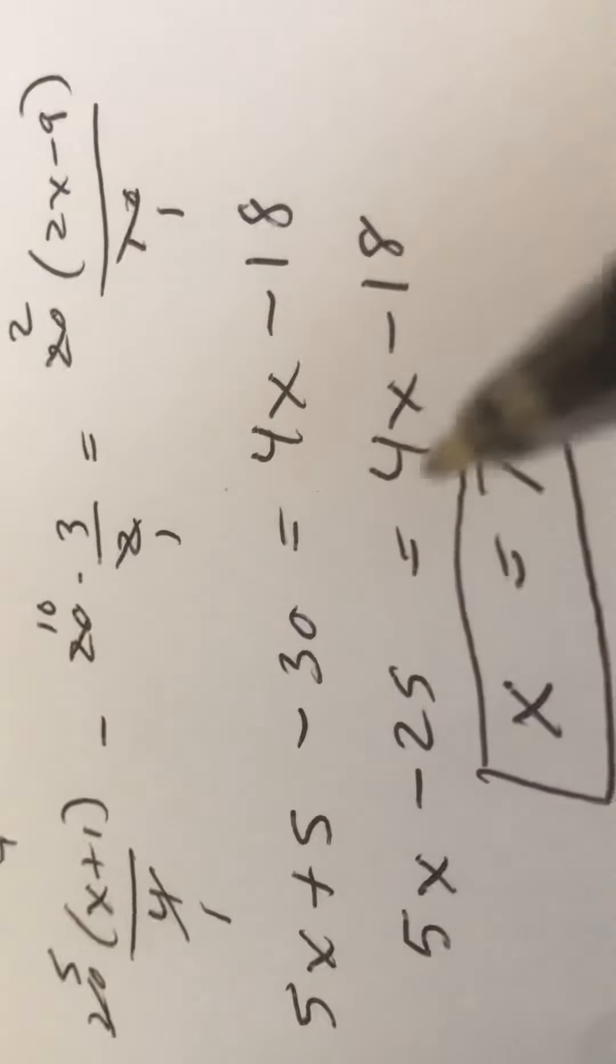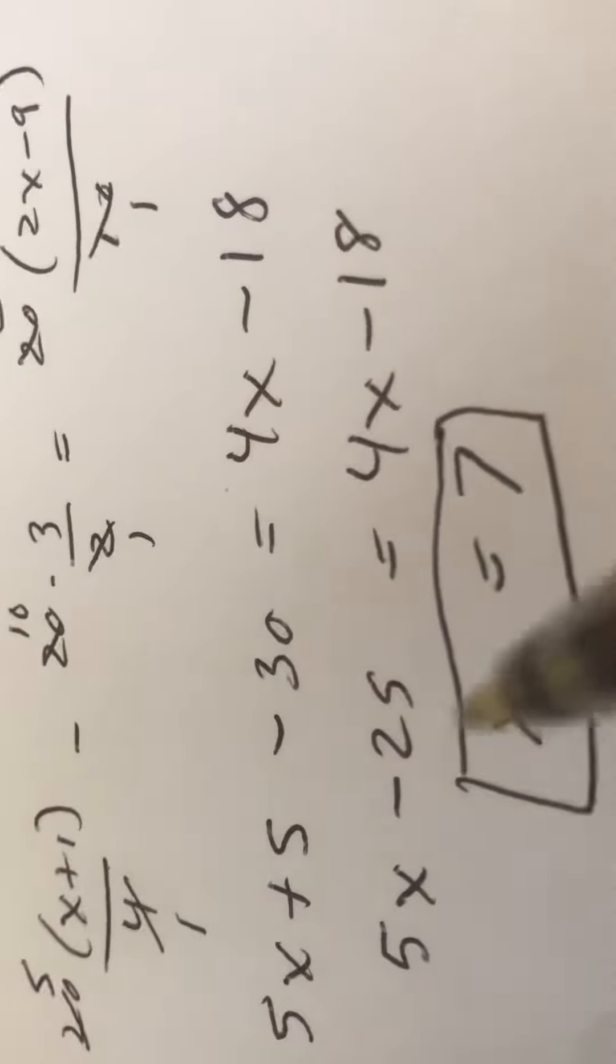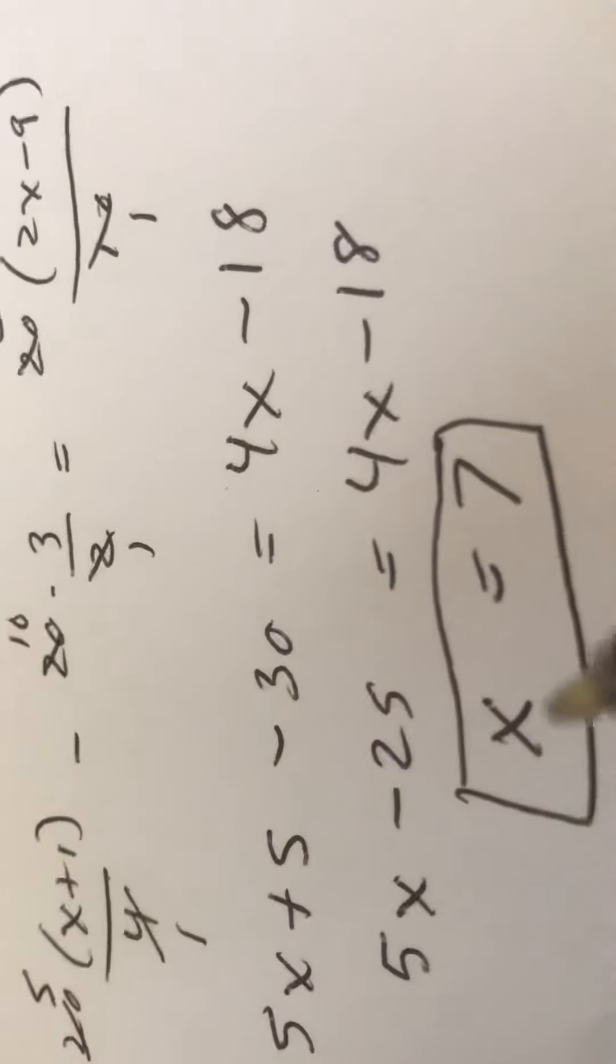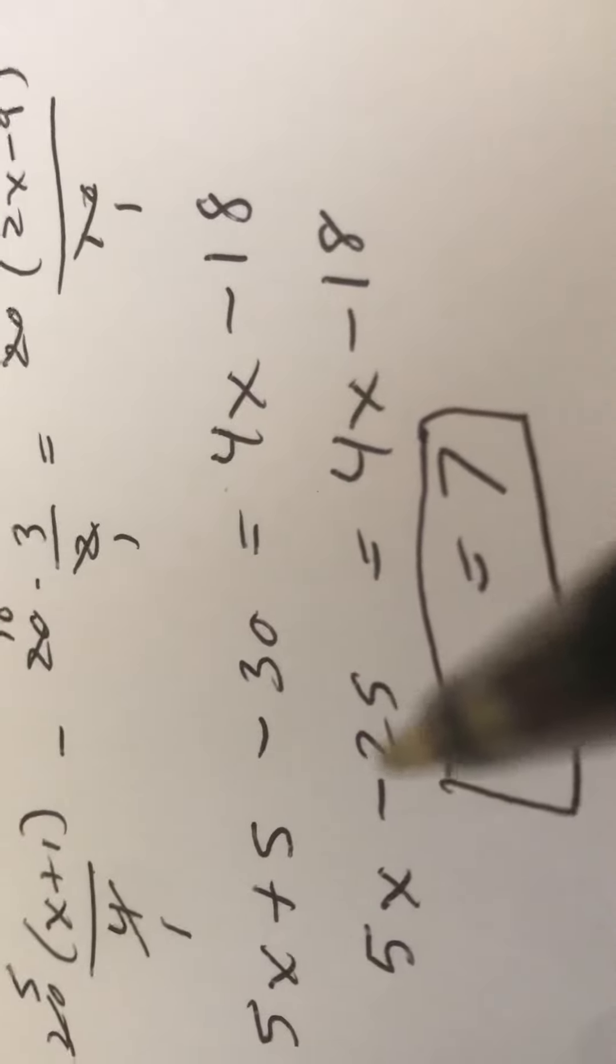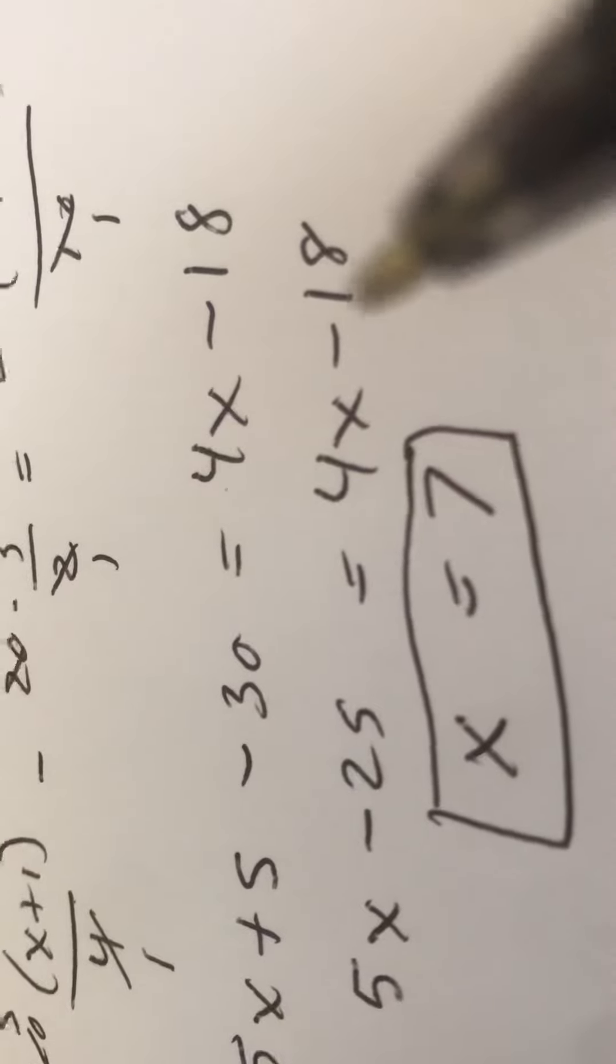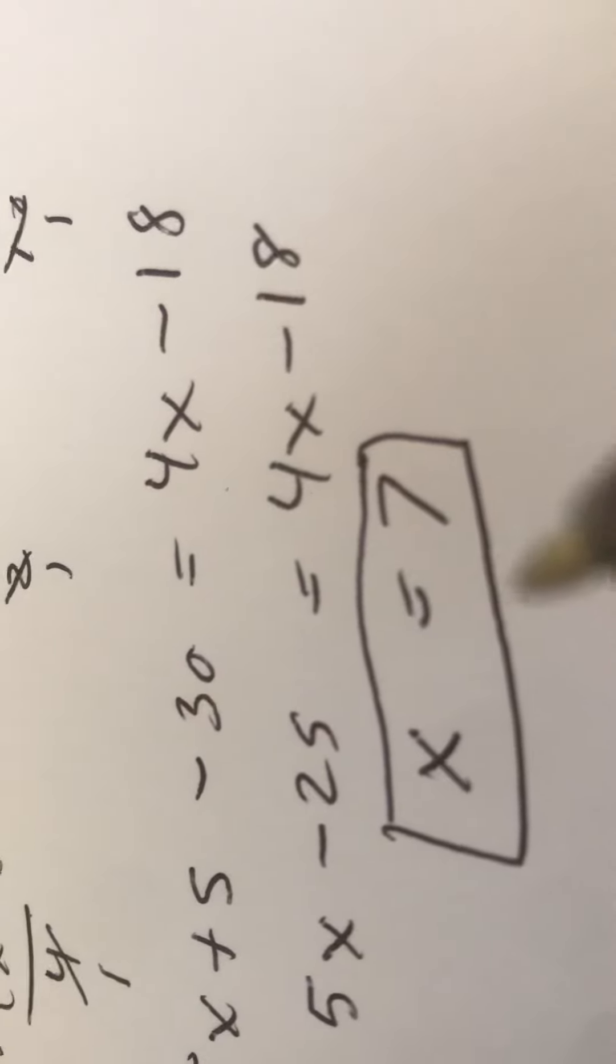Then finally I get the x's on one side, so I subtract 4x from this side. 5x minus 4x is x. And then I add 25, makes it disappear here. When I add 25 I get 7. x equals 7.